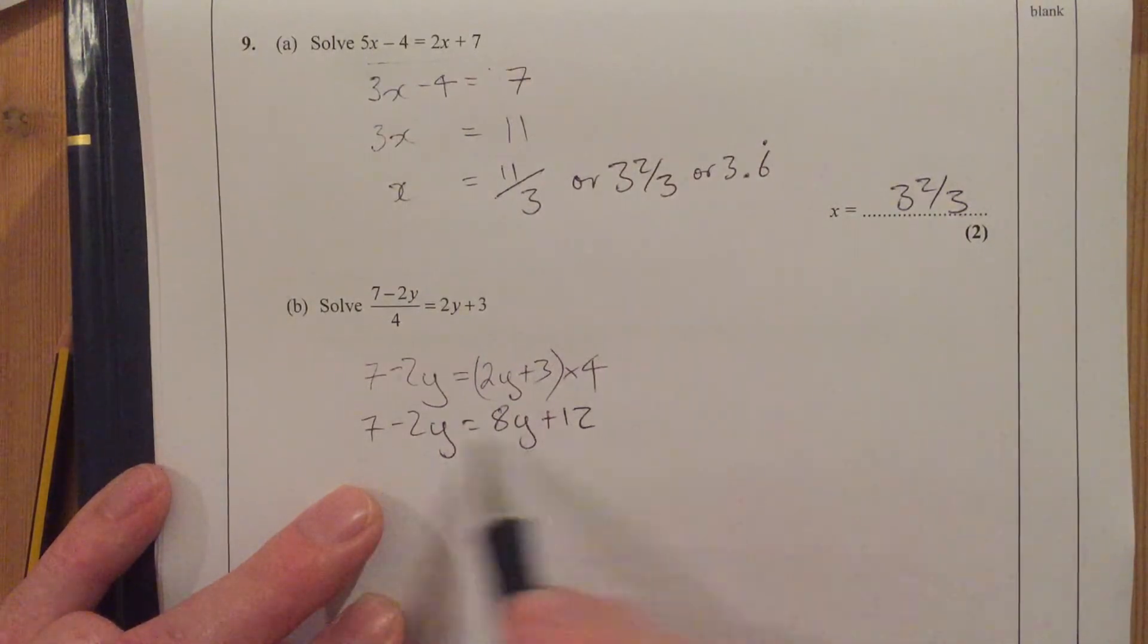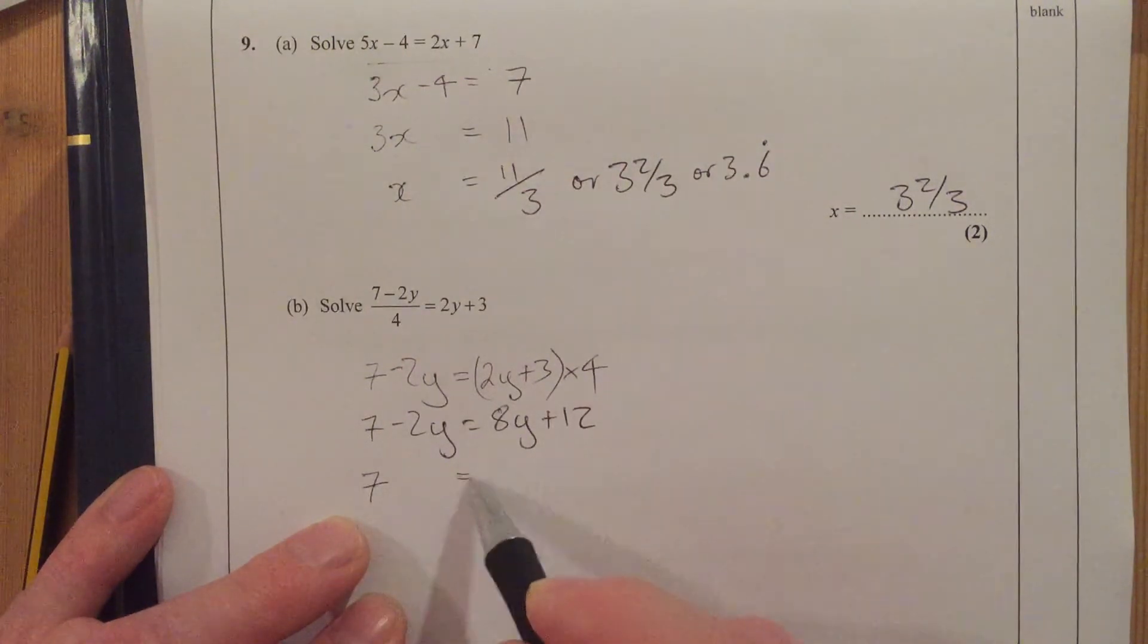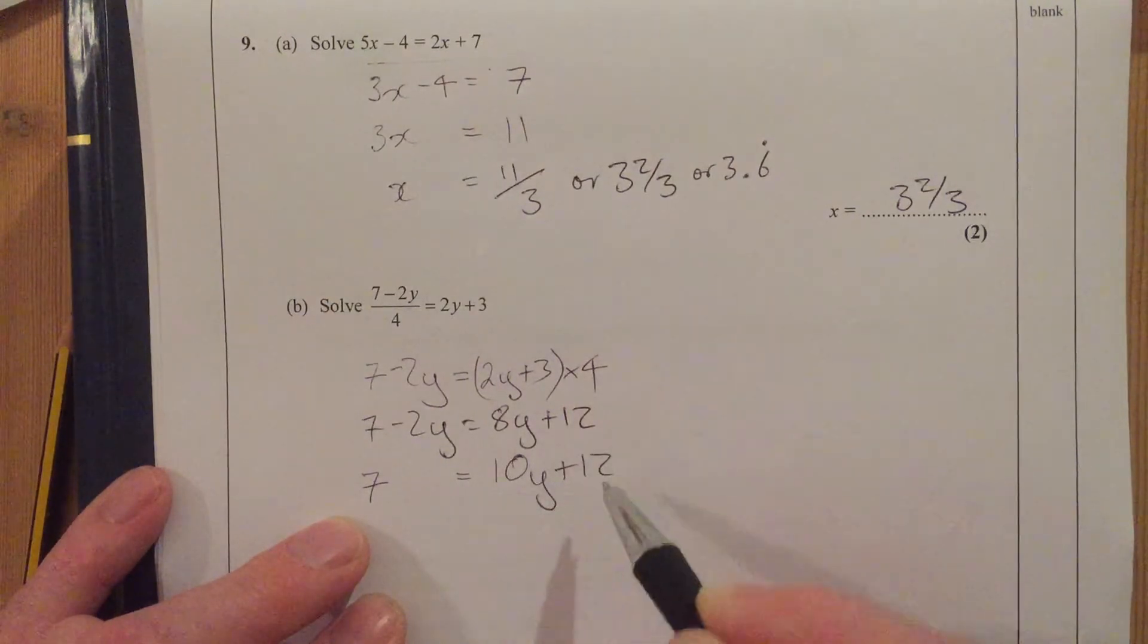You get the y's on both sides. I'm going to move it over to this side to get a positive number of y's. 7 equals, I'm going to add 2y to both sides, it's 10y plus 12. Now I'm going to take 12 off both sides, so I get minus 5 is 10y.